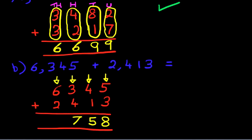And lastly, the thousands column. What is 6 plus 2? That's right. 6 plus 2 is 8. And we have our answer.